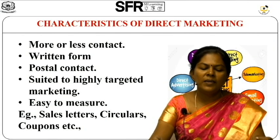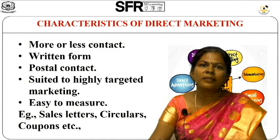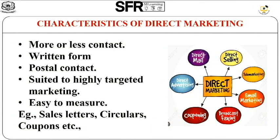Next we are going to see about some of the characteristics of direct marketing. In this direct marketing, a personal contact can be maintained with the customers. So how it can be followed? Mostly there will be a written form of communication — it can be a sales letter or circulars. These forms of written communication are maintained in direct marketing.